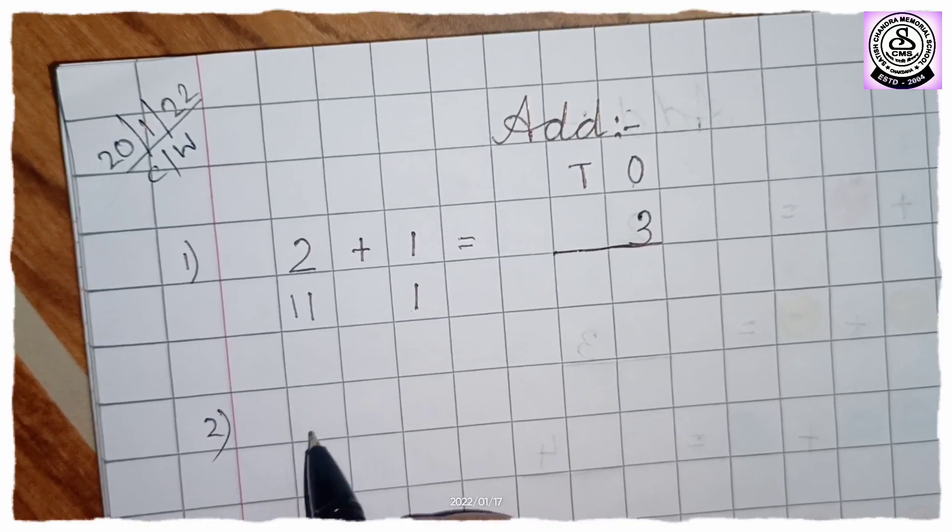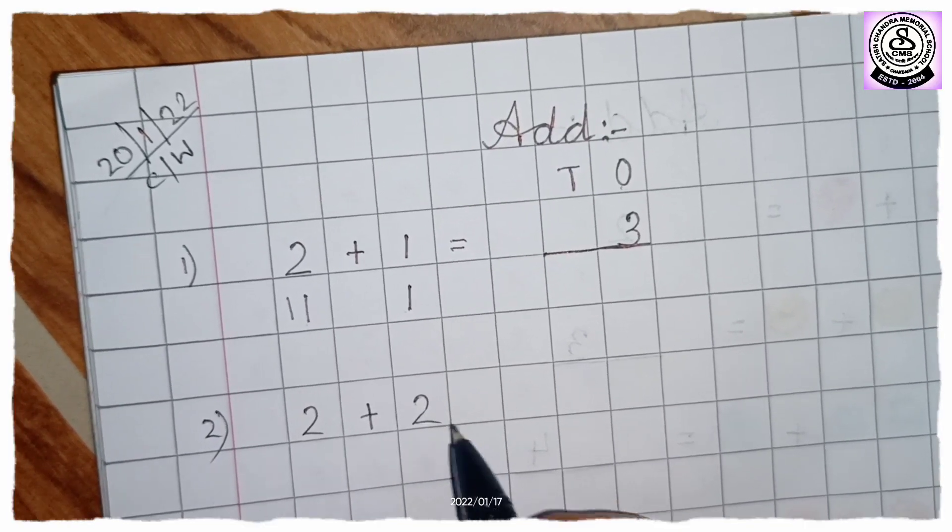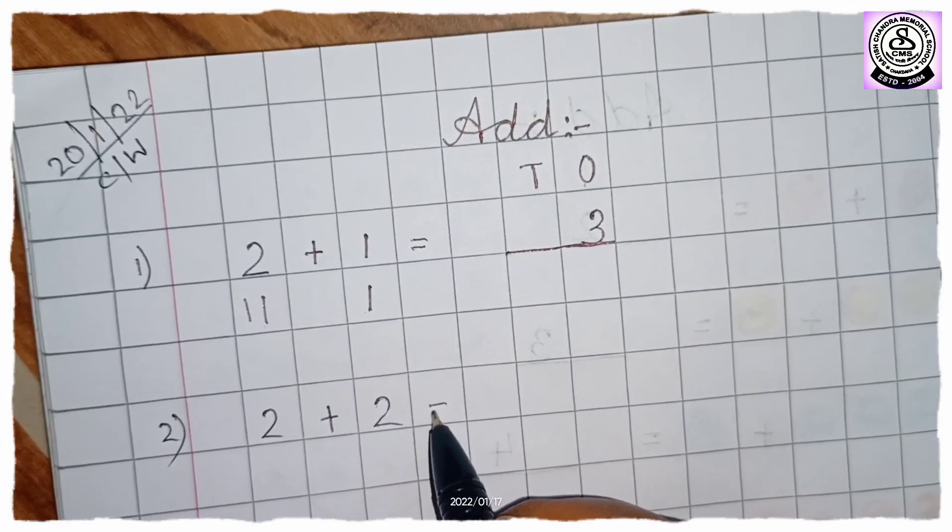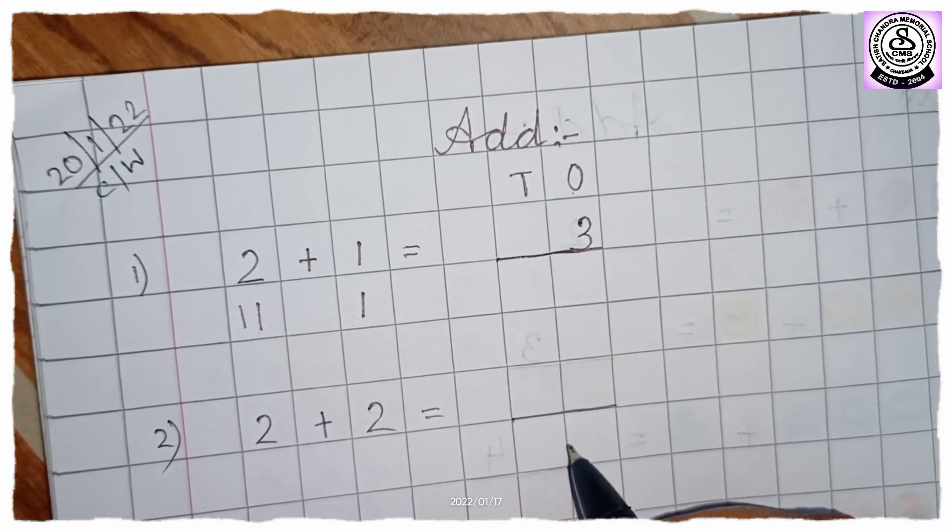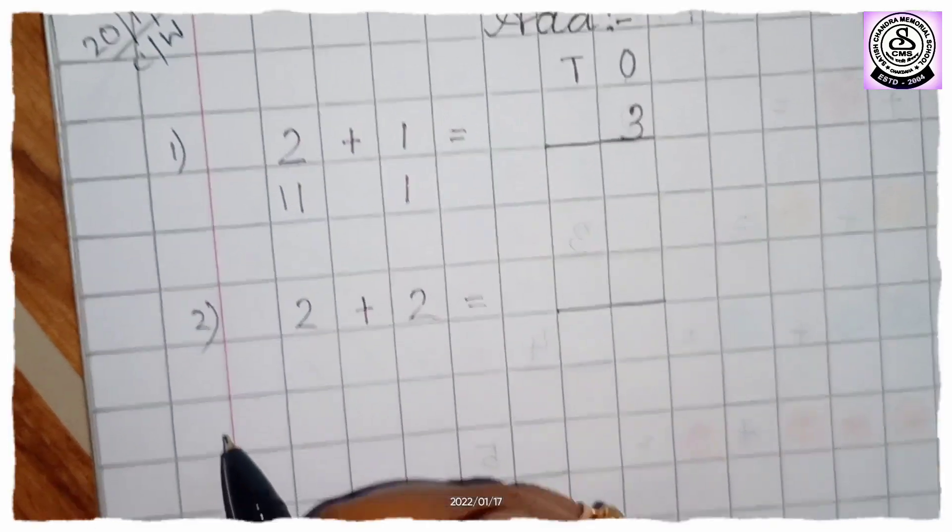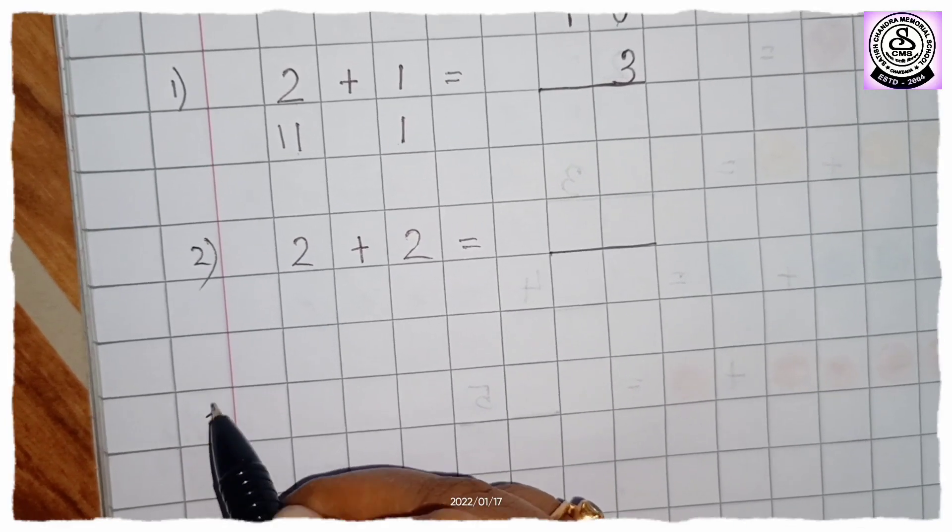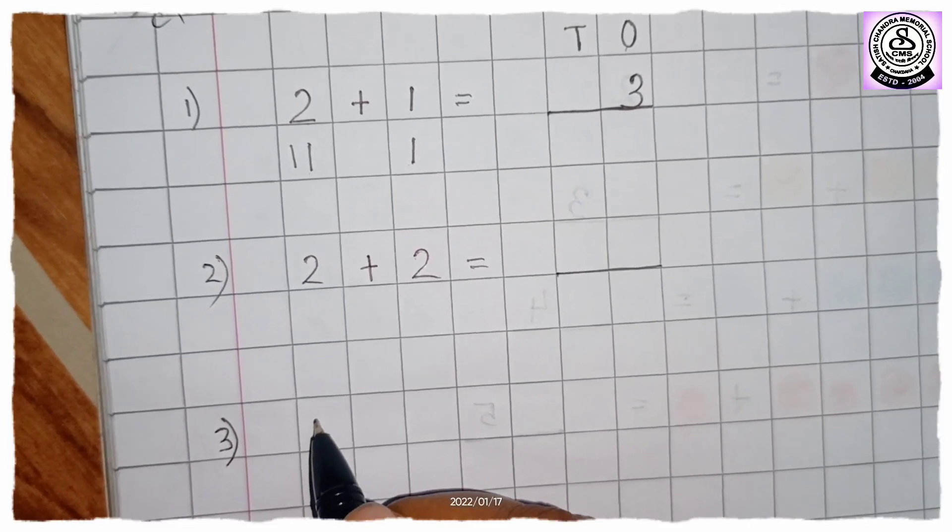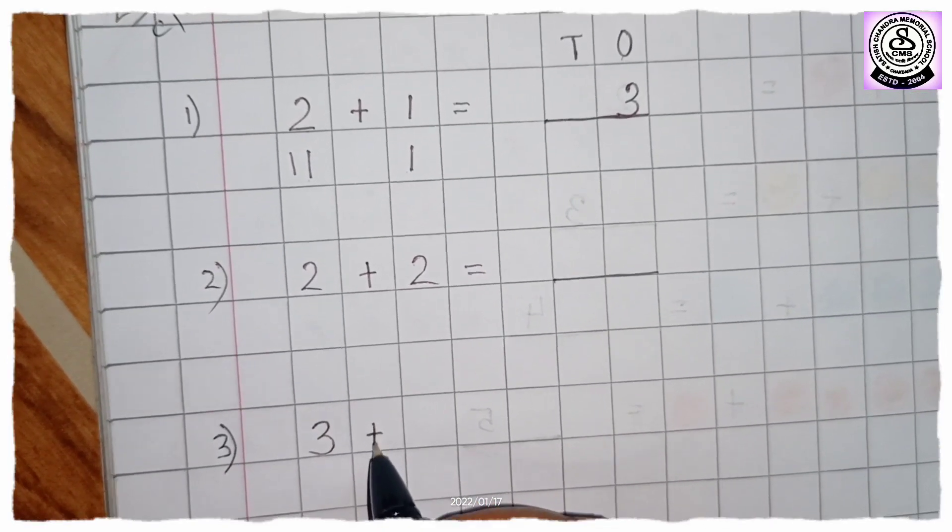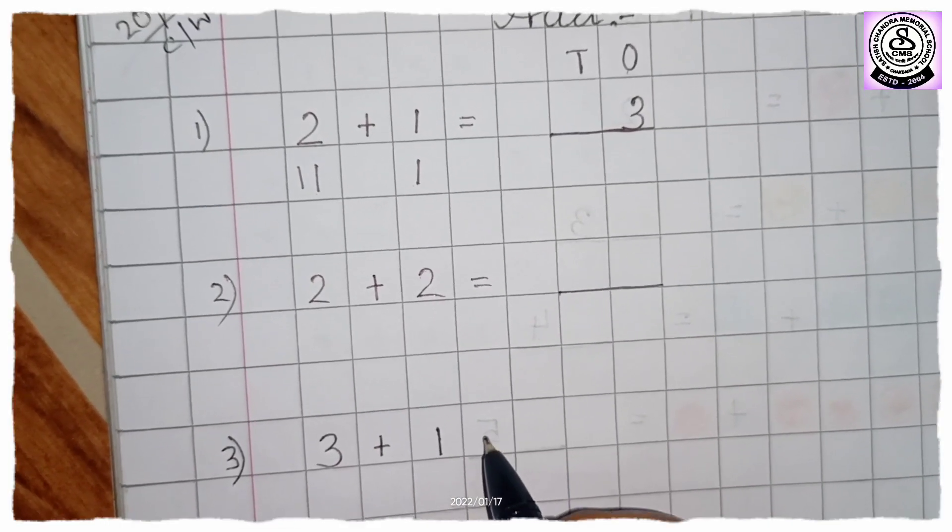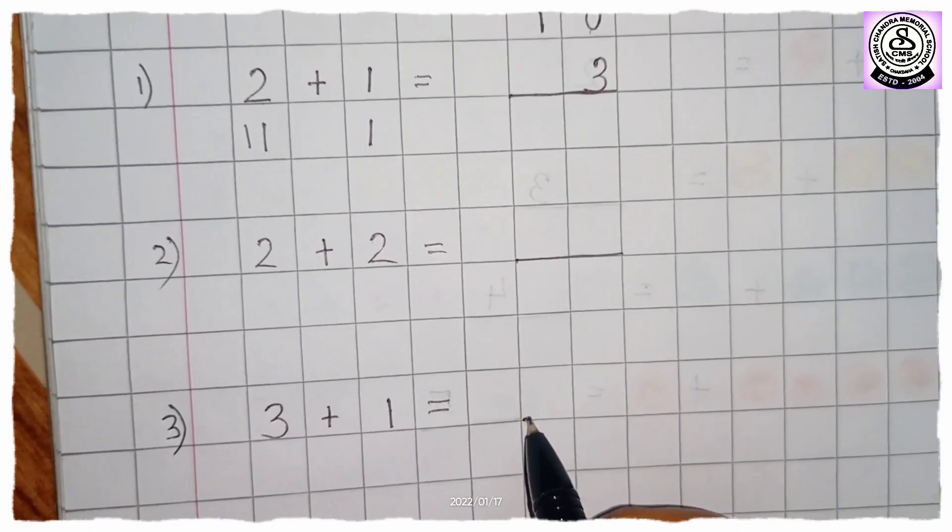So write question number 2. So this is 2 plus 2 is equal to. Leave 1 box and give a dash. Now leave 2 lines in between. Now write question number 3. Bracket.